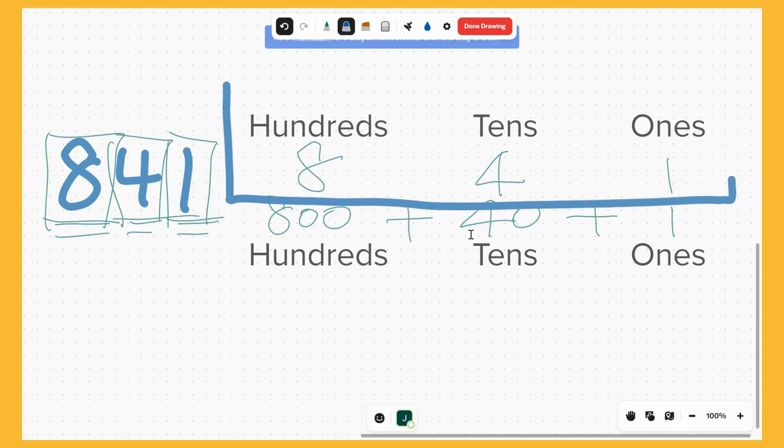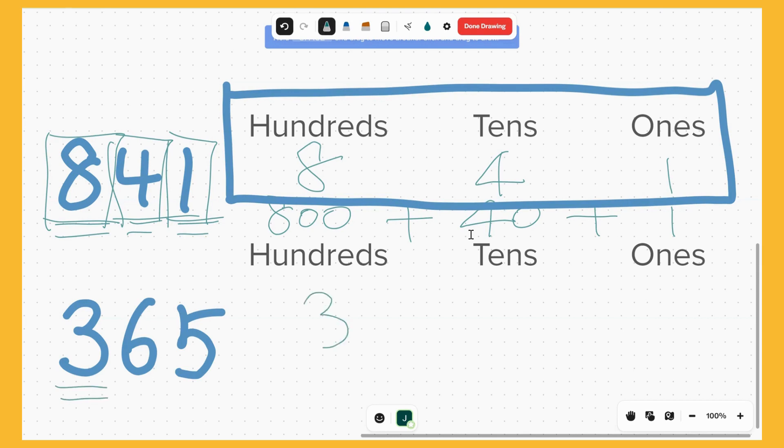Let's try another number here: 365. This time we are going to analyze from the left. So we got three hundreds and we got six tens.